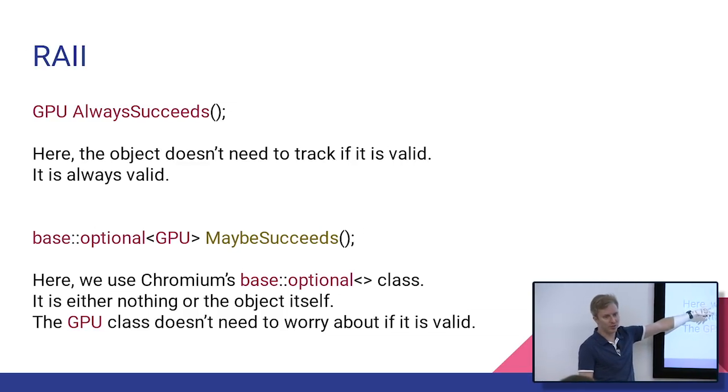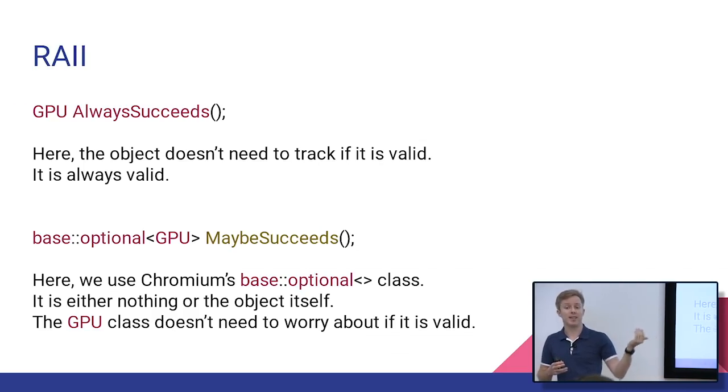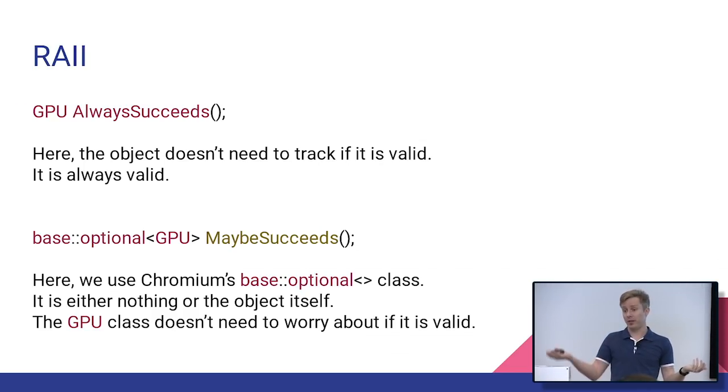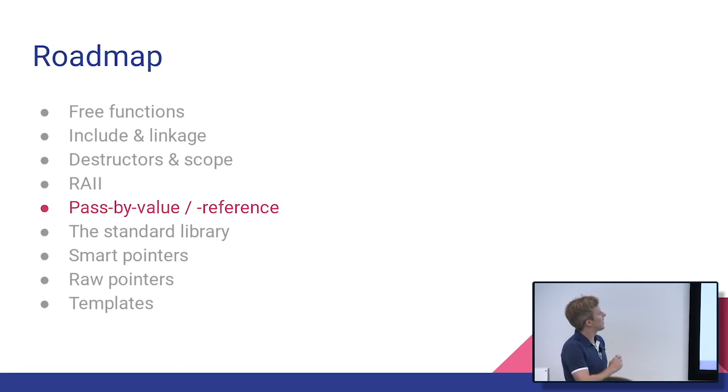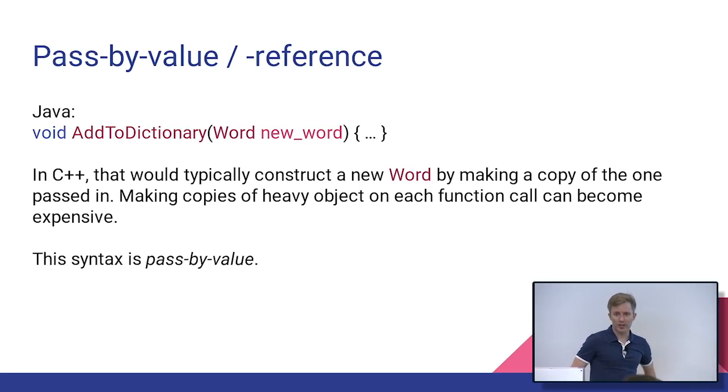BaseOptional will either be the class you wanted it to be, or nothing. And so that way, our GPU class doesn't have to track, did I fail to initialize. OK, passByReference and value. This one's a little weird, because a lot of other languages, they try to, with garbage collection and all that, they try to manage this for you. And you don't really get a clear view of what is a reference and what isn't a reference.